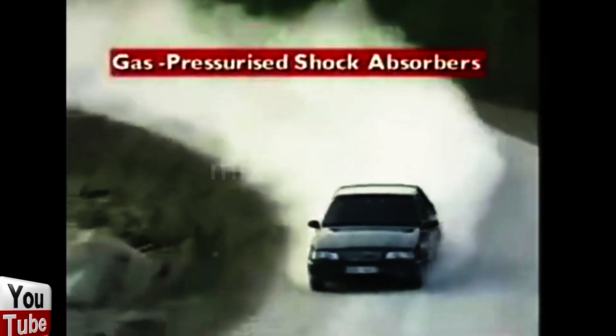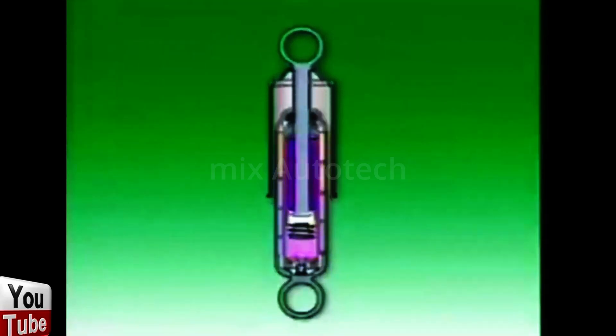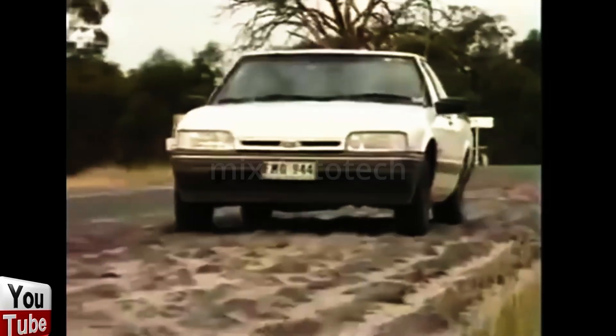This section examines gas-pressurized shock absorbers. In a hydraulic shock absorber the oil heats up as the energy of motion of the suspension is dampened. The rapid piston movement as the vehicle moves over the road causes the hydraulic fluid to aerate, which reduces the dampening effect and the shock absorber's performance very quickly deteriorates. This condition is called shock absorber fade. It can be reduced substantially by pressurizing the fluid with gas, usually nitrogen.